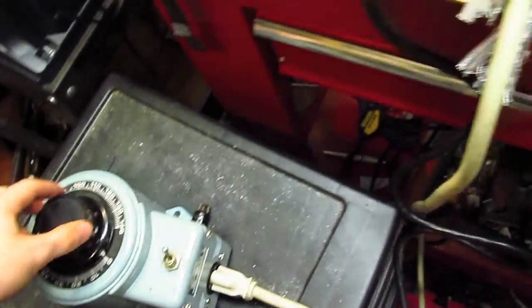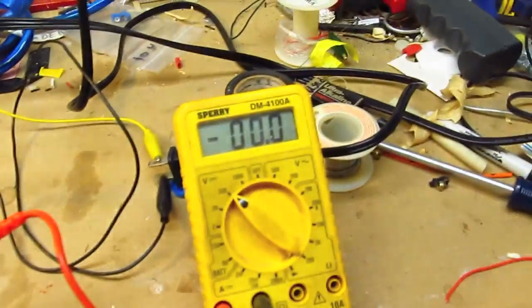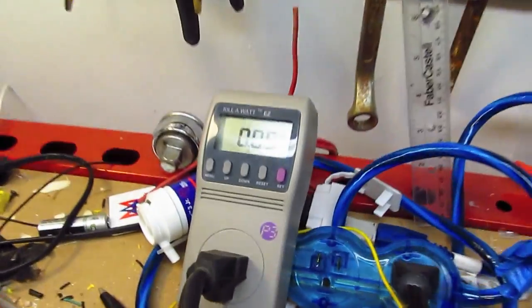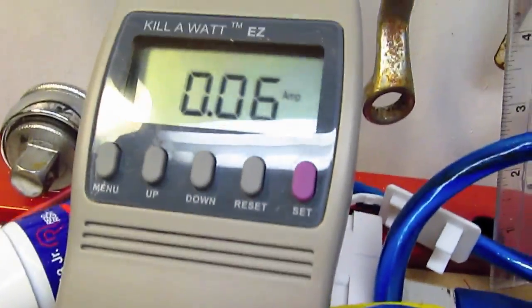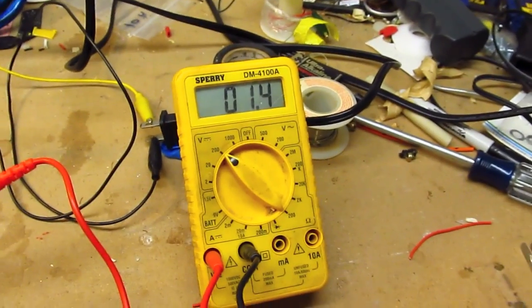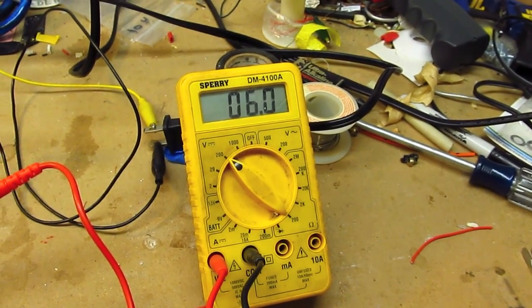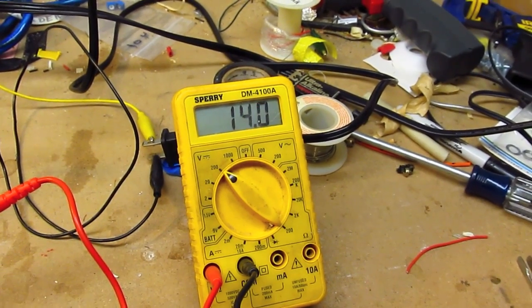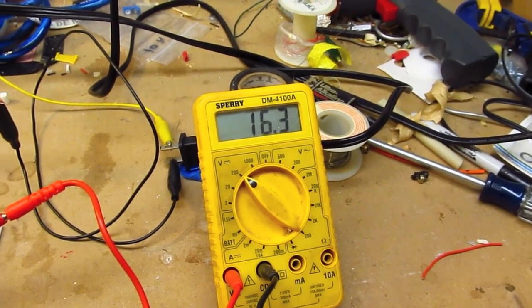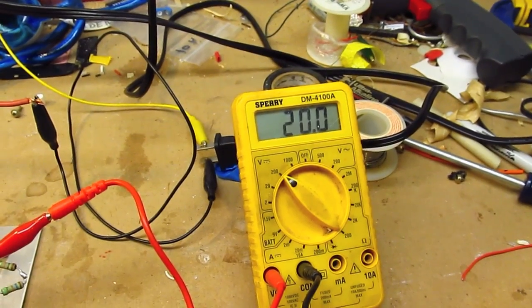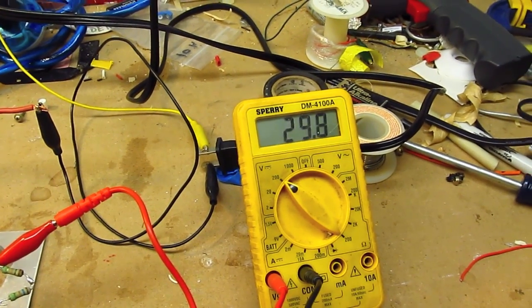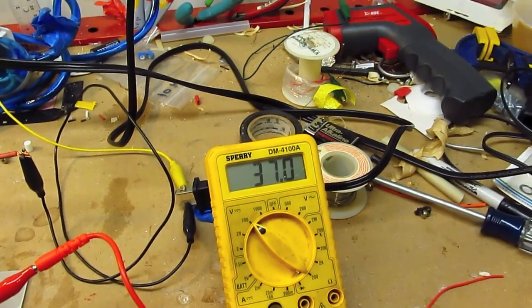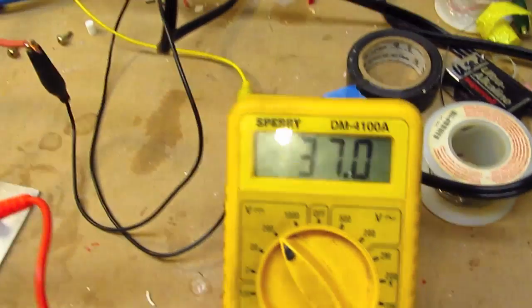Variac is on. Drawing idle current. No output voltage. Now, slowly cranking up the output voltage. Alright, 37 volts DC.